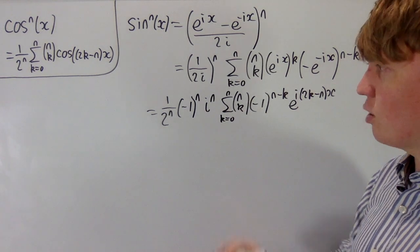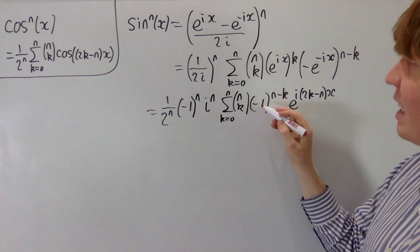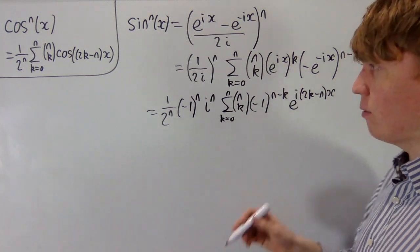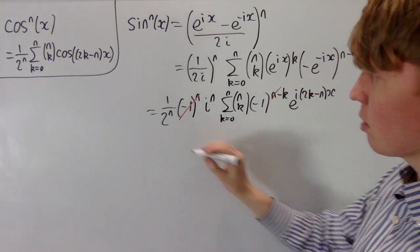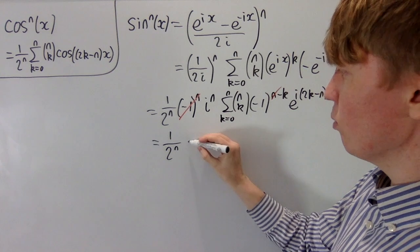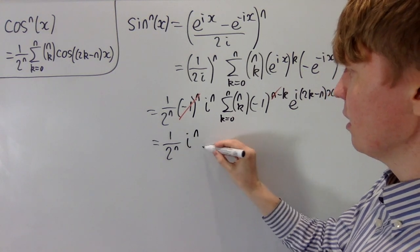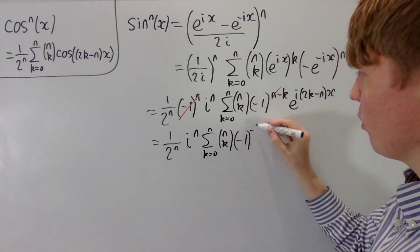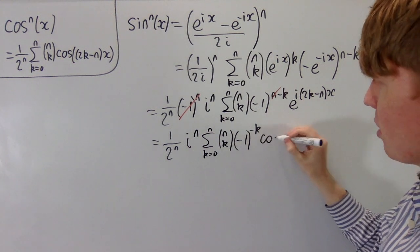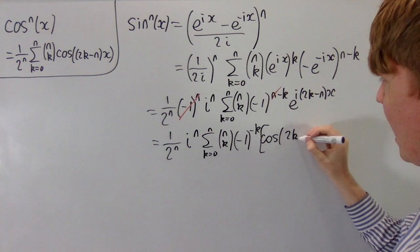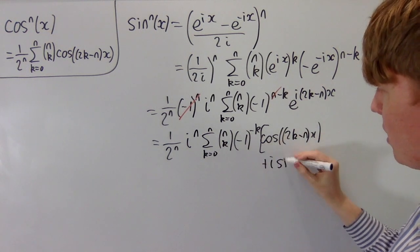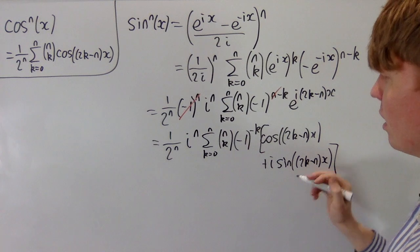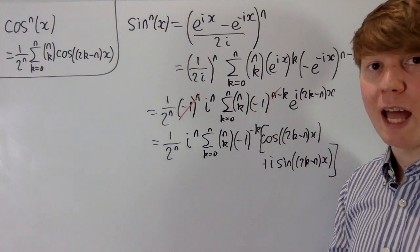There's a small cancellation: the (−1)^n outside the sum combines with the (−1)^n inside to give (−1)^(2n) = 1, which we can drop. So we're left with (1/2^n)·i^n times the sum from k=0 to n of C(n,k)·(−1)^(−k)·[cos((2k−n)x) + i·sin((2k−n)x)]. We now check which terms cancel depending on whether n is odd or even.